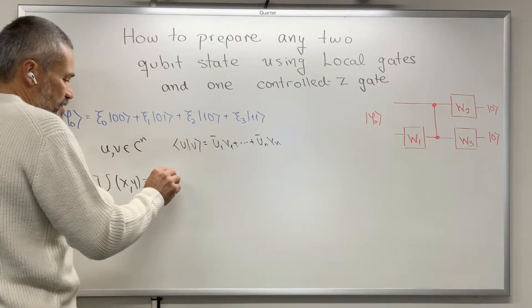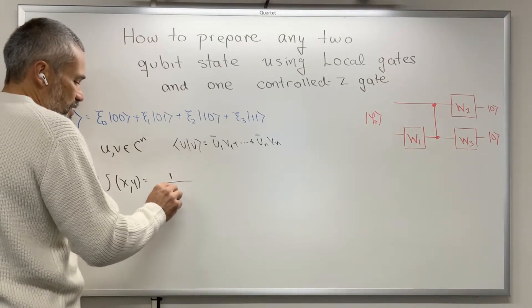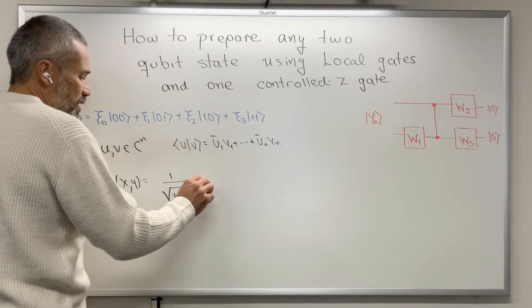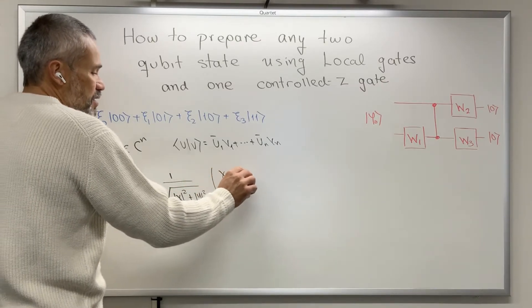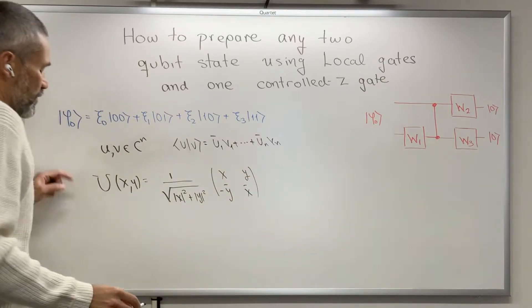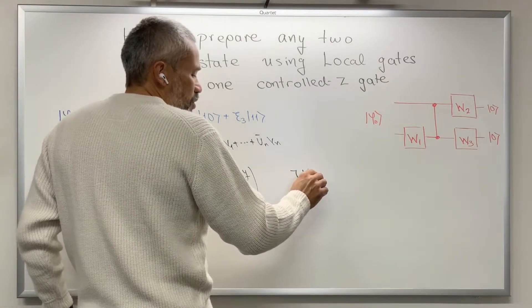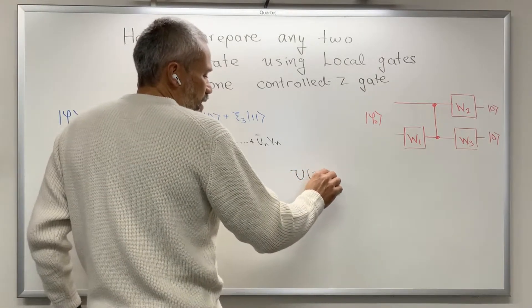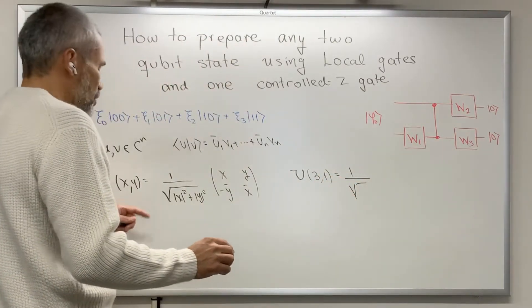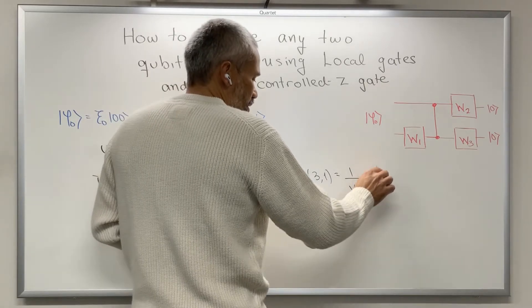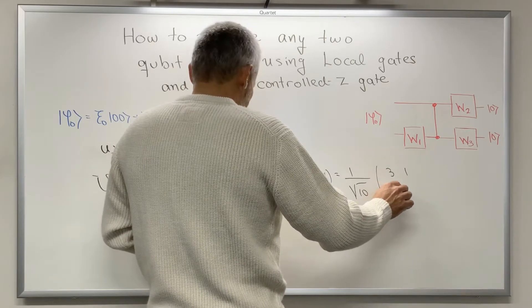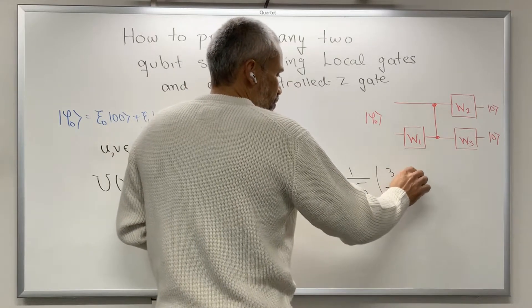For any x and y different from (0, 0), we define this unitary matrix as one over the square root of (‖x‖² + ‖y‖²) times the matrix [x, y; −ȳ, x̄]. For example, U(3, 1) equals 1 over √10 times the matrix [3, 1; −1, 3].